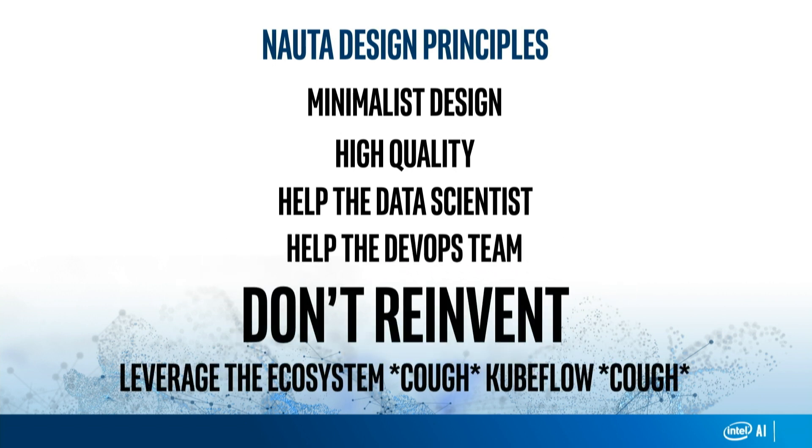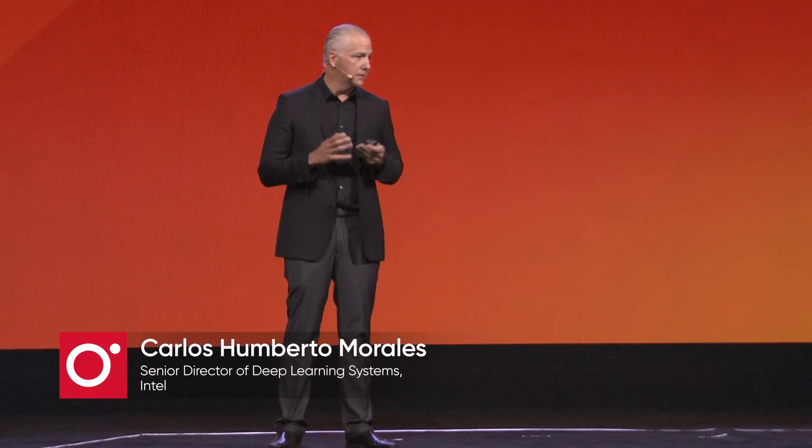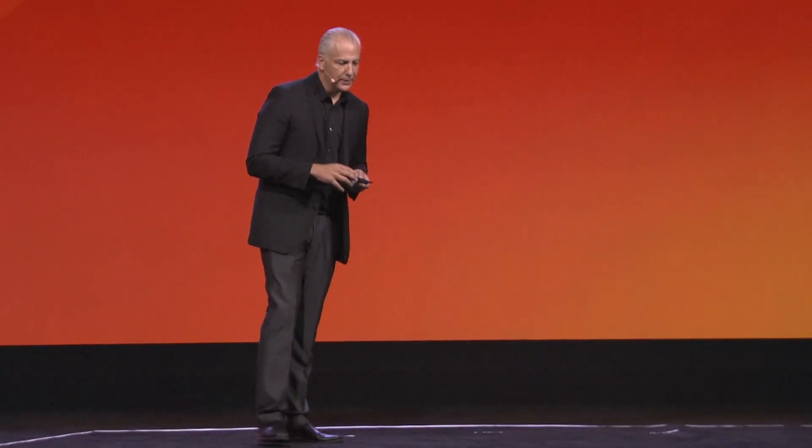And finally: don't reinvent. Another engineering instinct is to see something that's not quite right and build a better version. But community efforts like Kubeflow are really coming along and producing a lot of interesting technology, so we leverage open source — we borrow from them. For example, Kubeflow just came out with ML pipelines. We had a pipeline internally and were planning to build a feature around it, but instead we said no, we'll just use that.